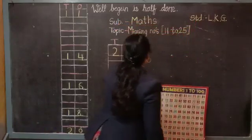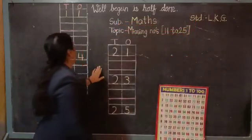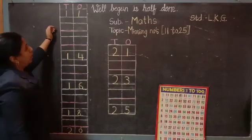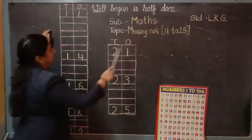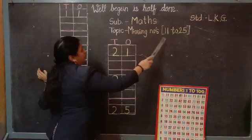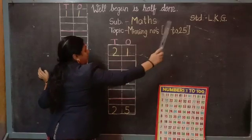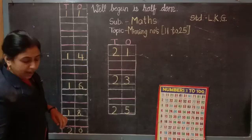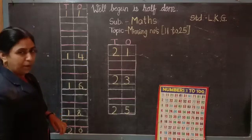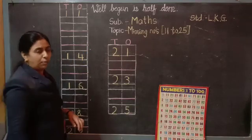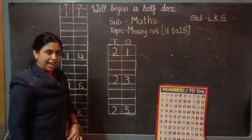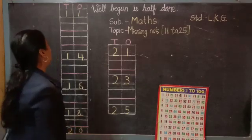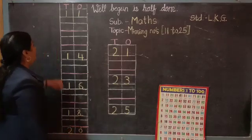Now look here on the blackboard. Today we are going to learn how to write missing numbers from 11 to 25. You know about missing numbers? Very good. So look here.